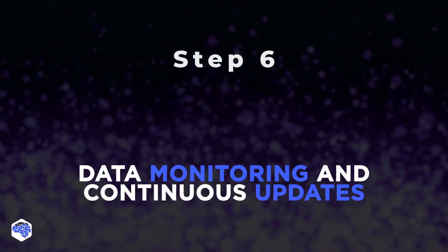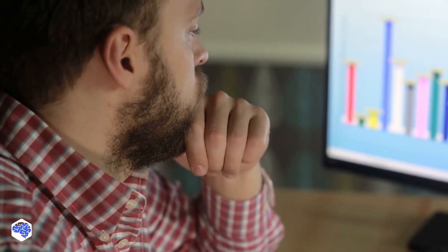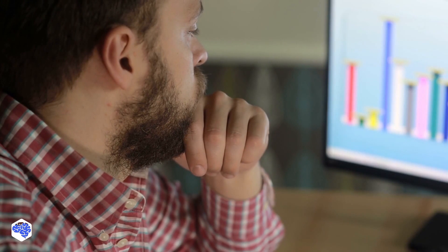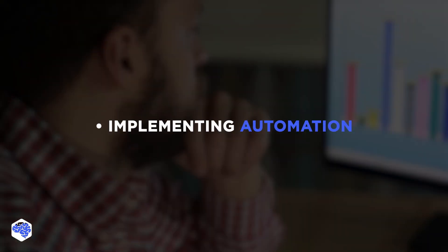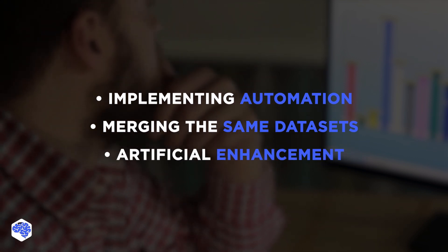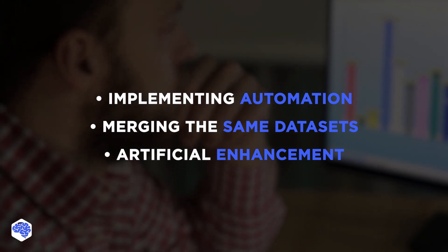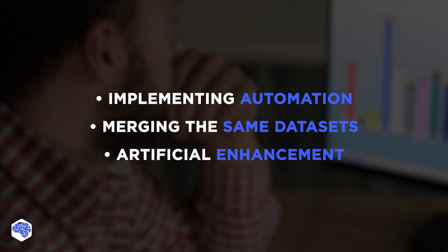The last step is data monitoring and continuous updates. To make continuous maintenance easier, the Jelvix team does the following: implementing automation to analyze data, track performance, and detect issues; merging the same datasets and grouping them by purpose and content to make updates and maintenance easier; and artificial enhancement, where the team can send extra data from publicly available services to the database to enrich the range of insights.